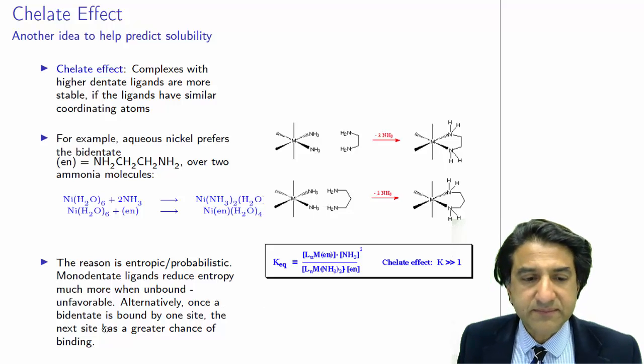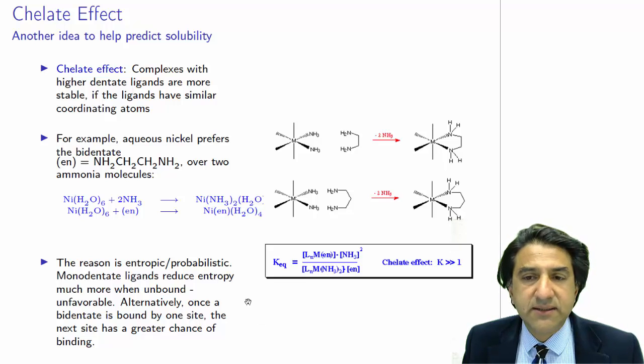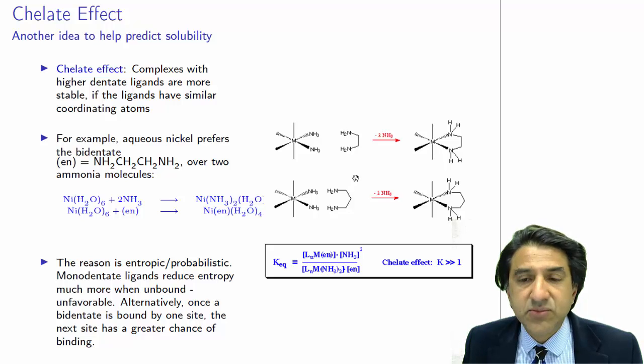So both of those ways of thinking of it are correct. This is why bidentate, tridentate ligands are more stable than the corresponding monodentate ligand.